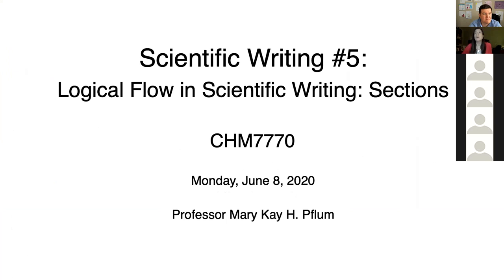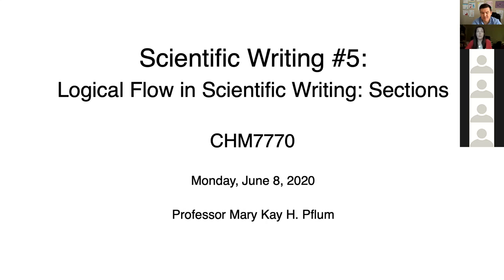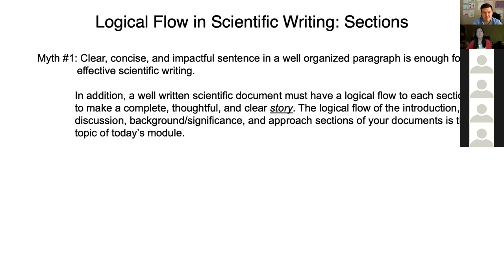The goal of today's last scientific writing module is on how to write good sections of a document. This really builds on what we've been learning in the past scientific writing sections. We spent several modules talking about how to write good sentences, then we talked about how to write a good paragraph. Now we're going bigger — how do you write a section? A section of a paper would be the introduction or discussion of a research paper, or for this class, your background and significance sections, which you should have just finished writing.